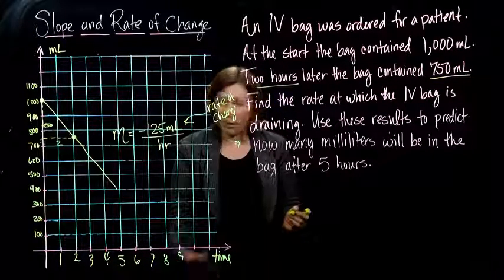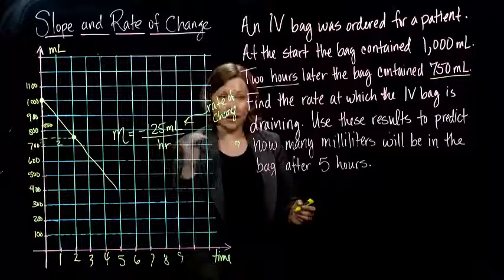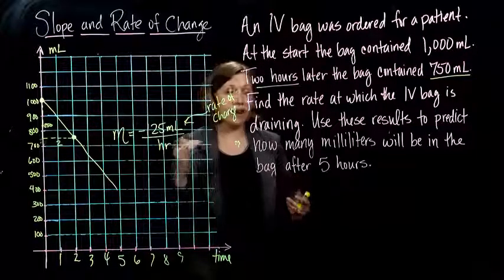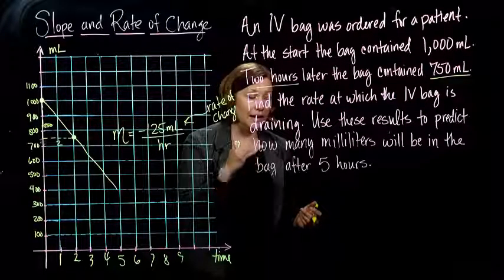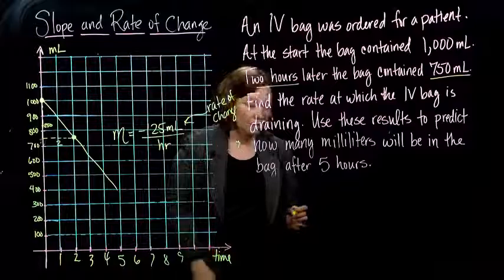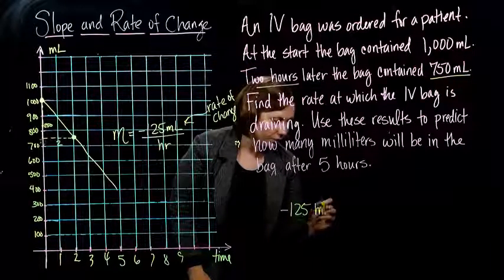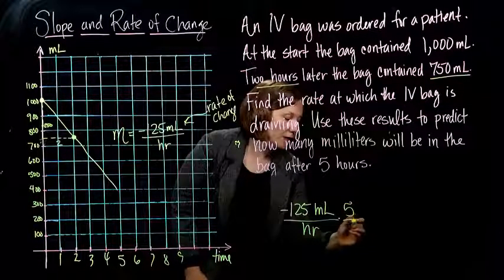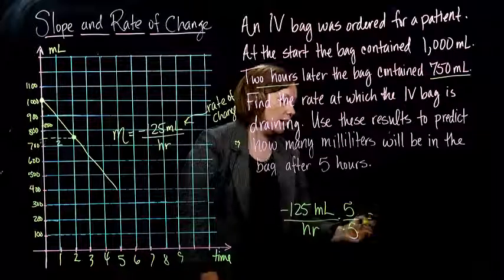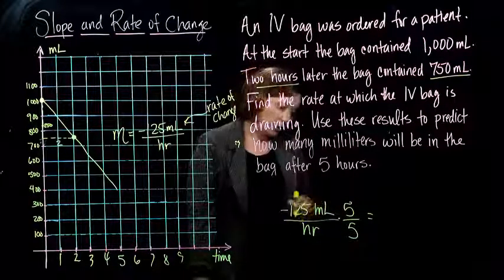So in five hours, when one hour goes by, I have gone down 125. When two hours go by, I go down another 125, which makes 250, right? And so on and so forth. So I can figure out how much I've gone down. Again, this idea of if I multiply by five on the top and five on the bottom, I can figure out how much I've decreased over five hours.